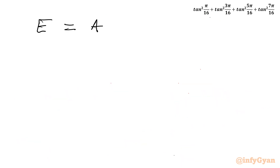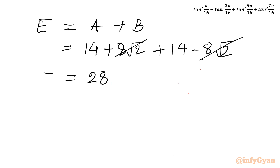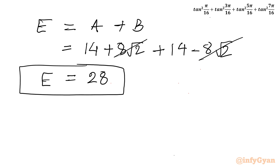Now let us calculate A + B. So E = A + B = (14 + 8√2) + (14 − 8√2). The 8√2 and −8√2 cancel, so it is 14 + 14 = 28. So our final answer for this evaluation of trigonometric expression problem is 28.